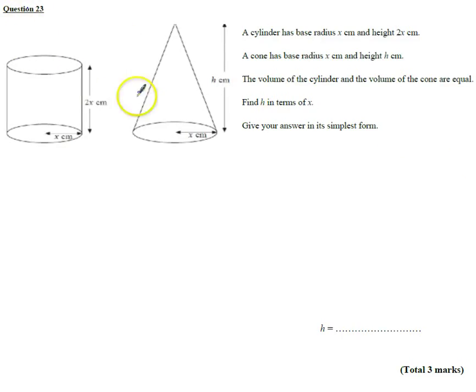Right, question 23 is the last question on the paper and this is a volume of 3D shapes question. We can see here that we've got the diagrams, it says the cylinder has base radius x and height 2x, cone has radius x and height h. The volume of the cylinder and cone are equal.